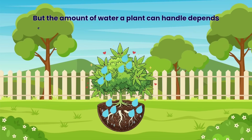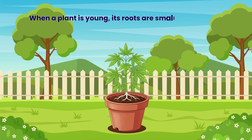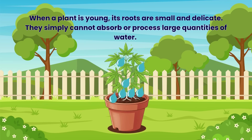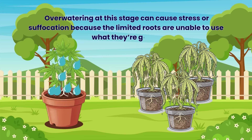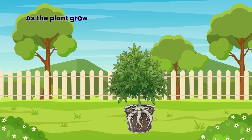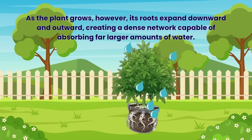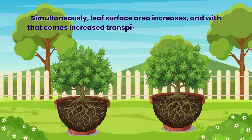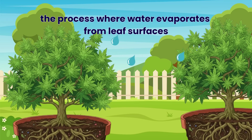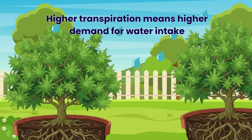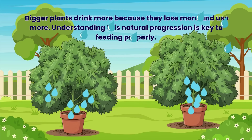The amount of water a plant can handle depends entirely on the size and maturity of its root system. When a plant is young, its roots are small and delicate — they simply cannot absorb or process large quantities of water. Overwatering at this stage can cause stress or suffocation. As the plant grows, its roots expand downward and outward, creating a dense network capable of absorbing far larger amounts. Simultaneously, leaf surface area increases, bringing increased transpiration — the process where water evaporates from leaf surfaces. Higher transpiration means higher demand. Bigger plants drink more because they lose more and use more.